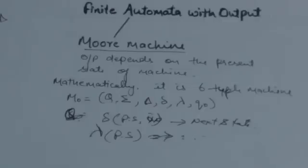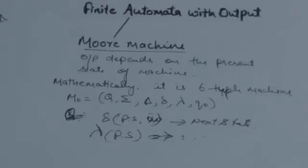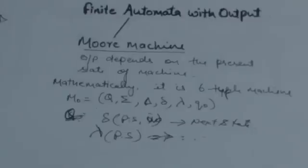Now we have two finite automata which can give output. One is Moore machine and the other is Mealy machine. In Moore machine, output depends on the present state of the machine. The output which the machine gives is independent of the input which the machine reads.